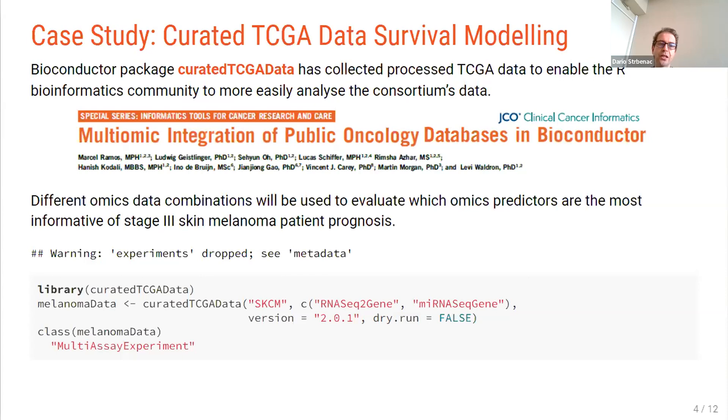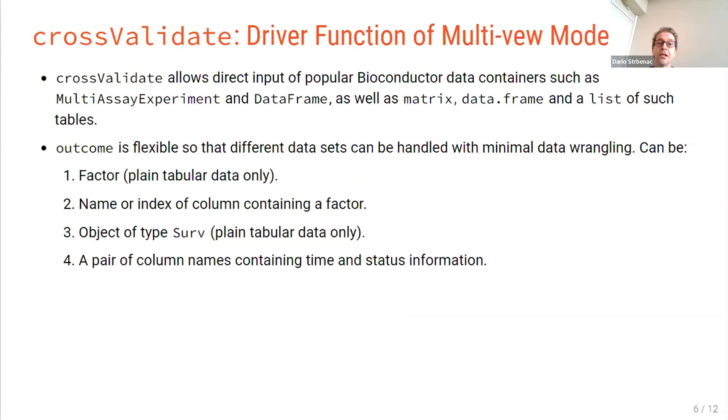So what I've loaded here is normalized RNA-seq data and microRNA-seq data. And we're going to compare those two data types. So after a bit more filtering and combining the days to death column with the days to last follow up column into a single column, which is more the convention in R to have a single column of follow up times and a single column of status. We'd get these cold data for our data set, which you can see has all stage three samples. Some of them are alive, which is zero, and some of them are dead, which is one. And we have those times in a single column.